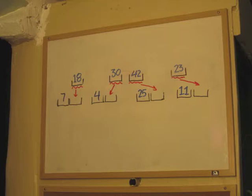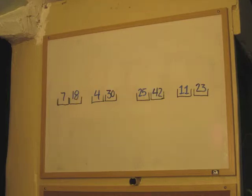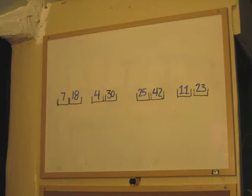Now the other halves of those lists will go into their lists: 18 goes in next to 7, 30 next to 4, 42 next to 25, and 23 next to 11. Now we have four lists with two numbers each.